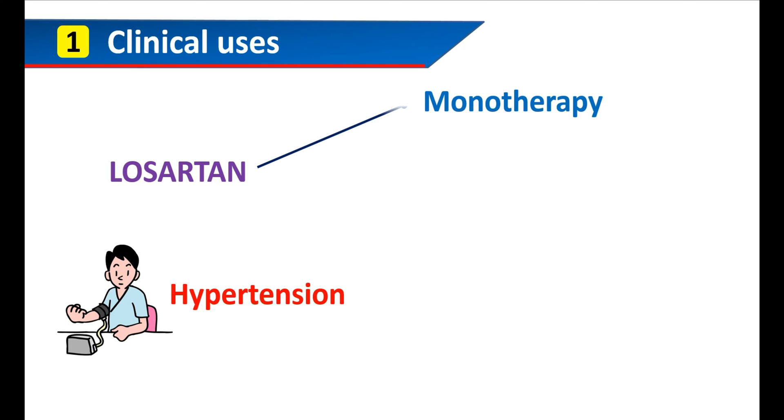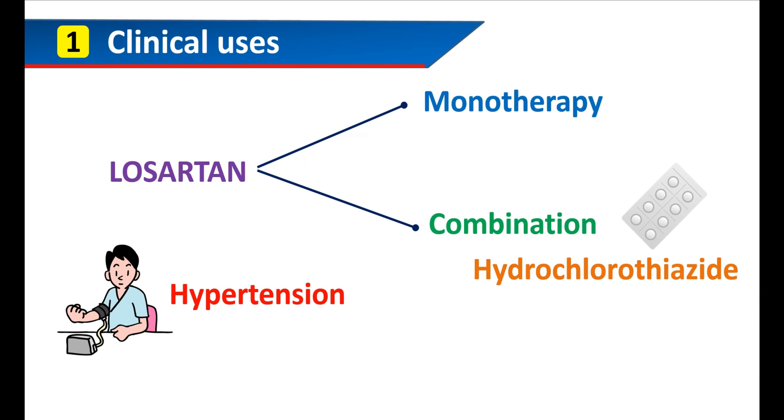First of all, let us see the clinical uses. Losartan can be given for the treatment of hypertension. It can be used in this condition as monotherapy, as a single drug. Otherwise, it can be combined as a combination therapy where this medication can be combined with other drugs like diuretics. Among them, hydrochlorothiazide is well-known and commonly used.